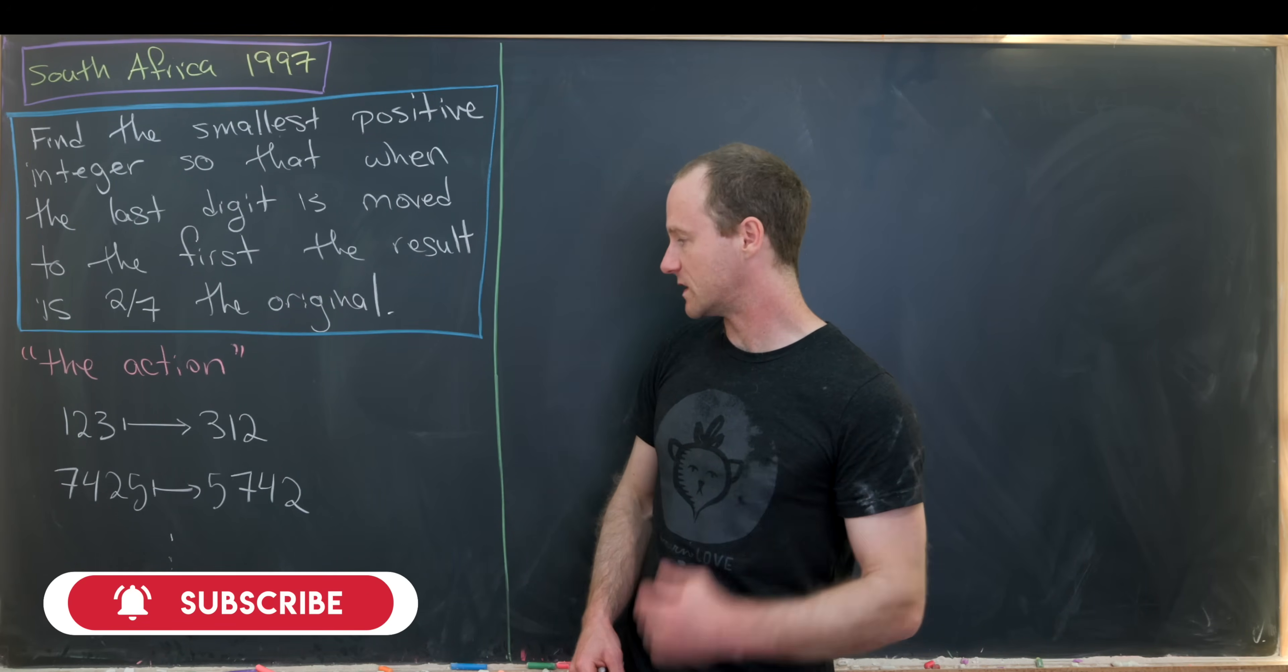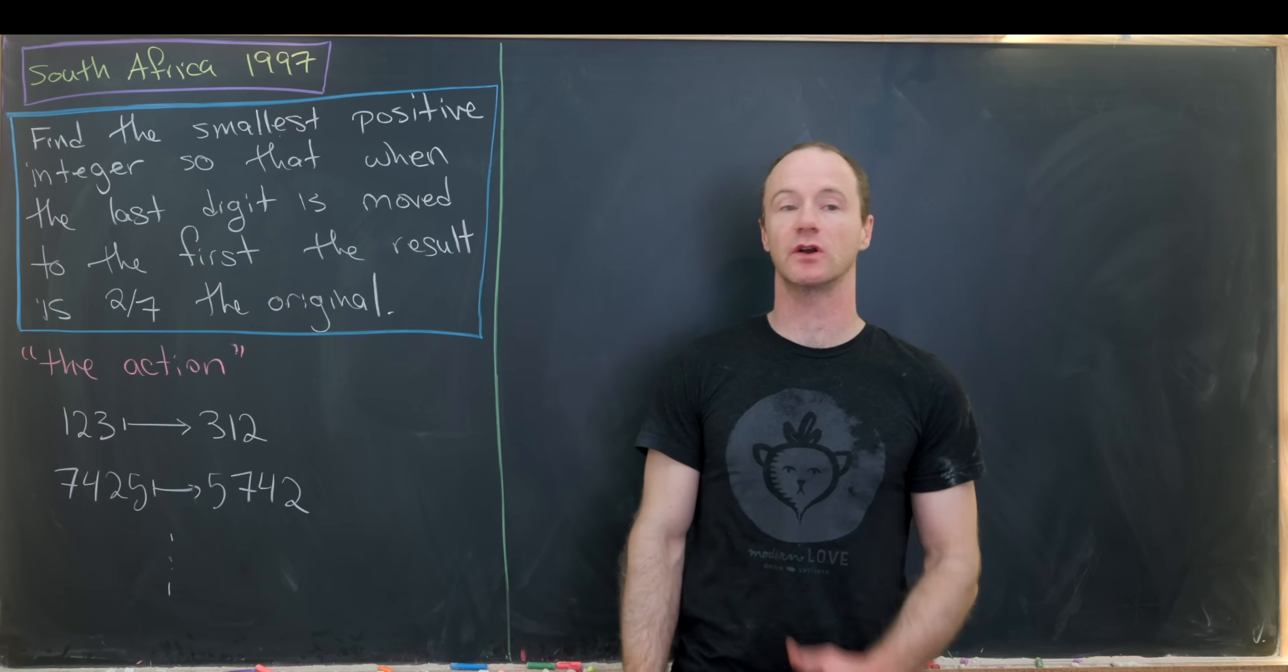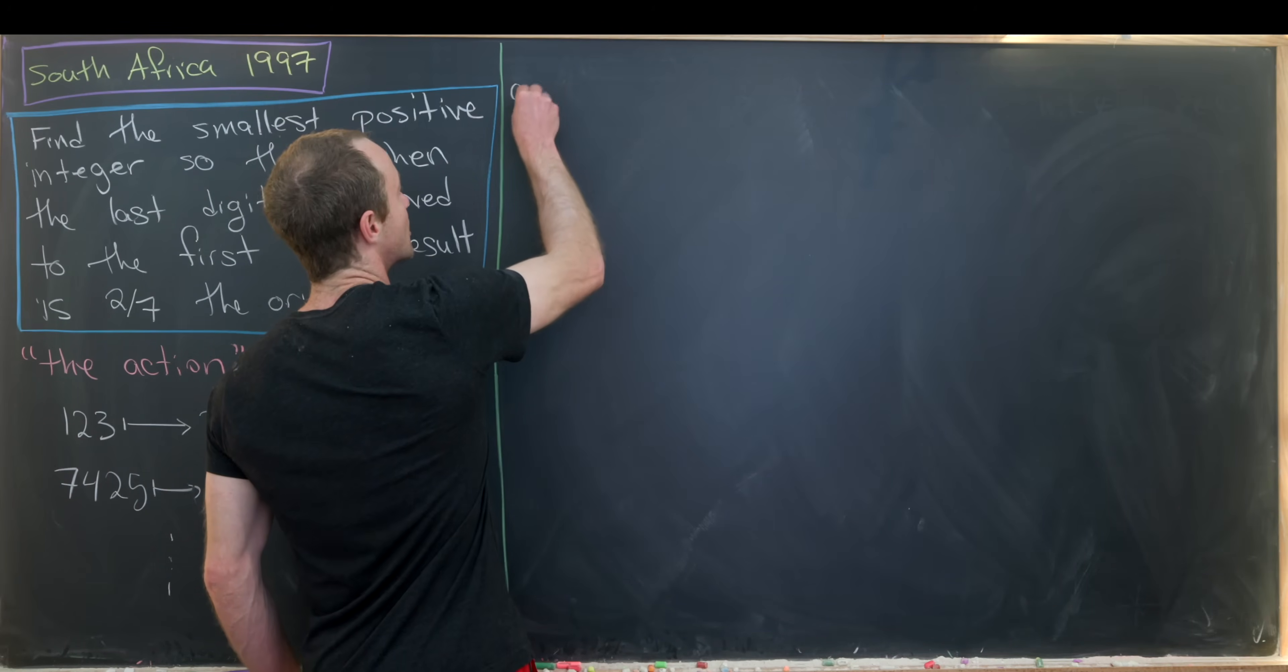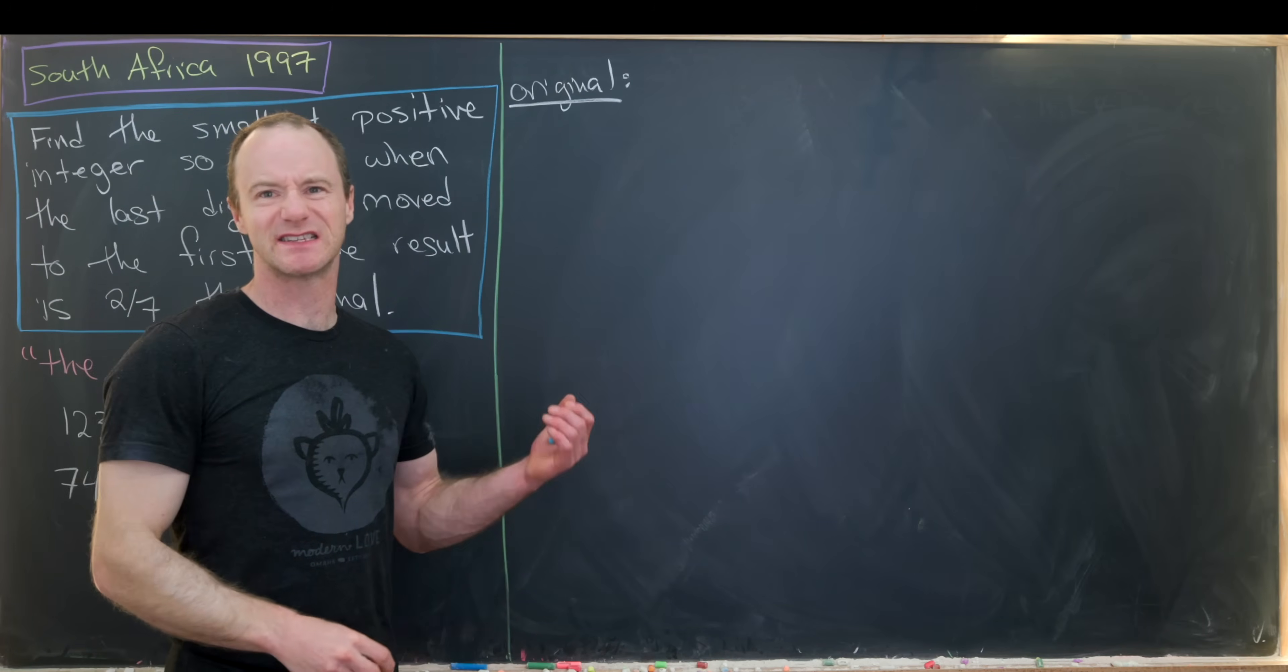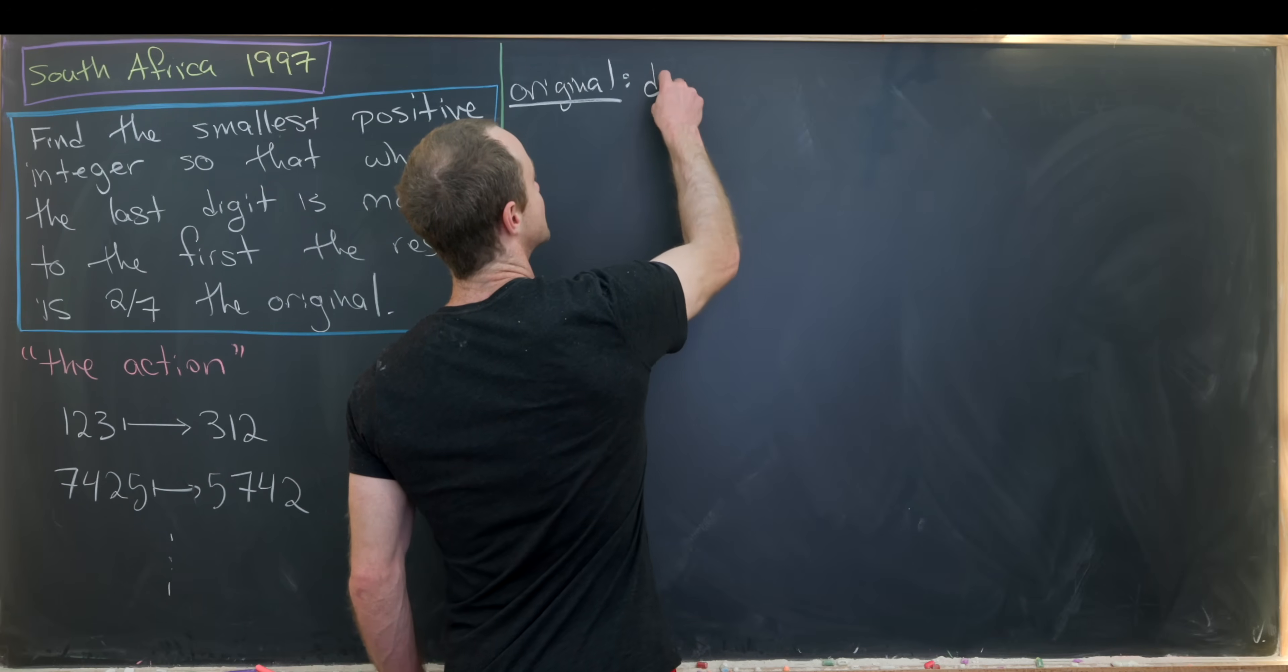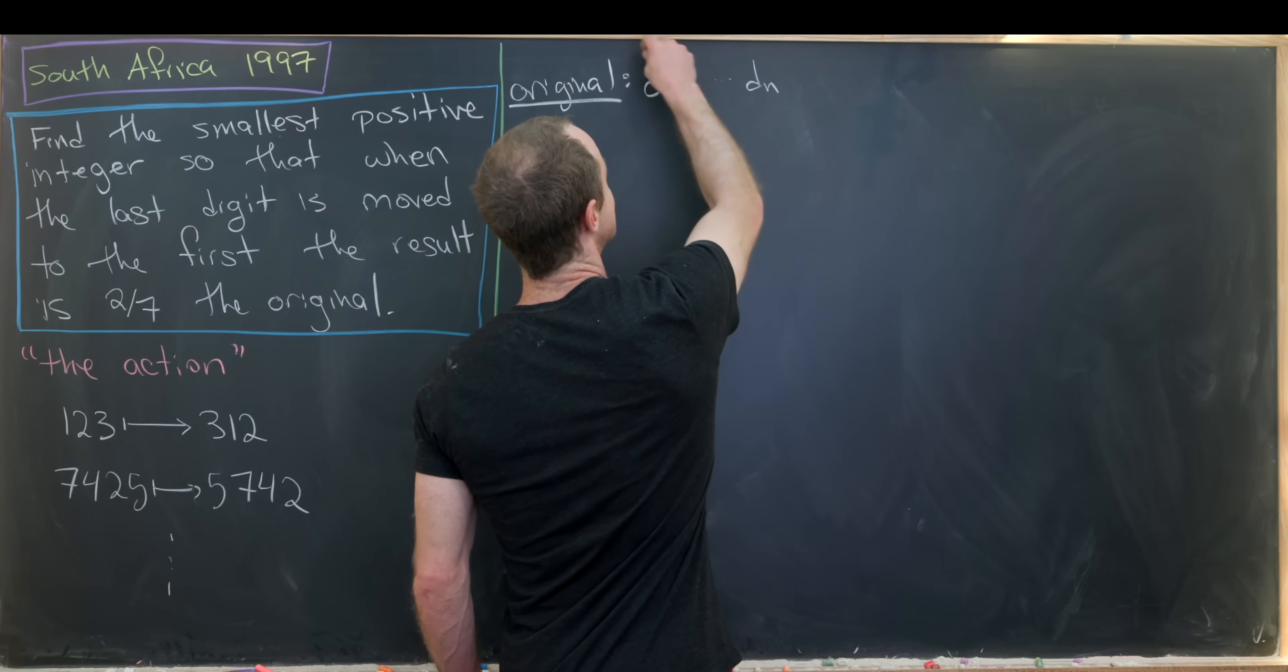So what we want is that the result here is two-sevenths what we started with. So let's get into it. I'm going to start by writing the original number down via its expansion with digits. And I'll use this standard overline notation for it. So the original number will be d1, d2, dot dot dot, all the way up to dn.